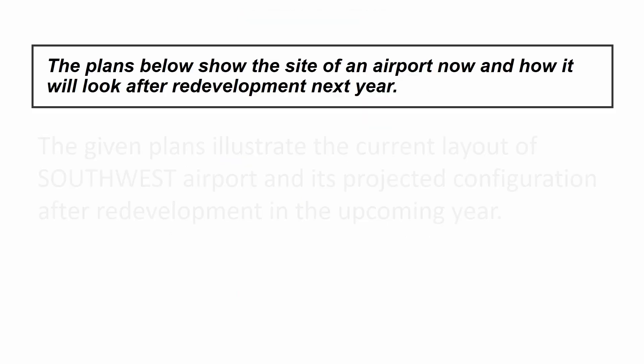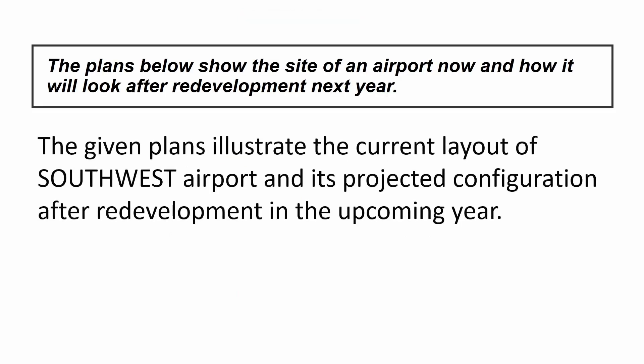The first thing I write is my paraphrase: 'The given plans illustrate the current layout of Southwest Airport and its projected configuration after redevelopment in the upcoming year.' Instead of 'show' I used 'illustrate.' Instead of 'the site of an airport,' I used 'the current layout of.' Instead of just 'the airport,' I used the name of the airport. Instead of 'how it will look after redevelopment,' I used 'its projected configuration after redevelopment.' And instead of 'next year,' I used 'in the upcoming year.'